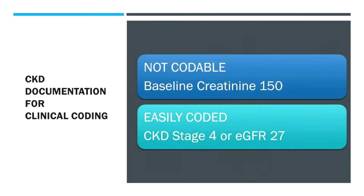Just as an example: if you're writing 'creatinine 150,' you can't code that. It doesn't come out as a GFR or a stage — coders aren't able to look up other information correlated with weight to come up with a calculated GFR. It needs to be either a documented GFR or a documented stage. What's easily coded is 'stage 4 CKD' or 'a GFR of 27' — that can be coded.